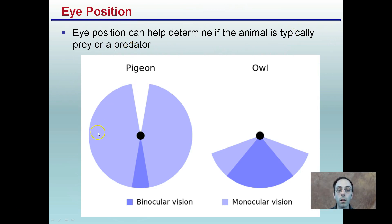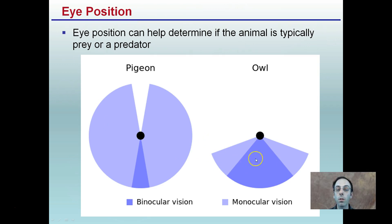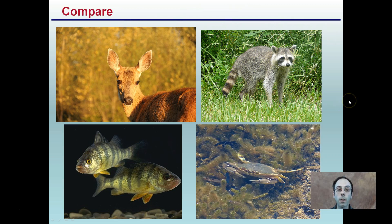A pigeon tends to be low on the food chain and has a very wide field of view. Its binocular vision area is very small, but its field of view is quite large. An owl, being a predator, has a reduced field of view but has a greater amount of binocular vision.